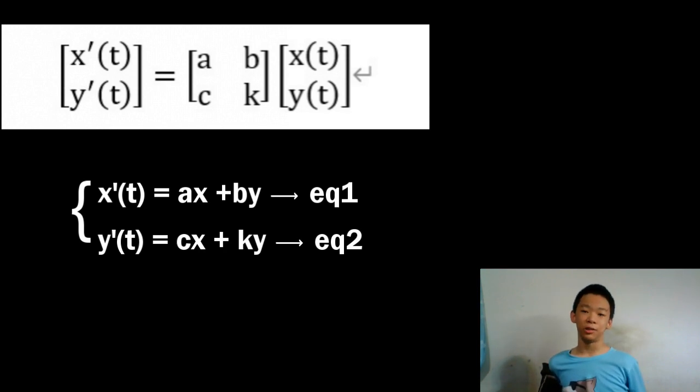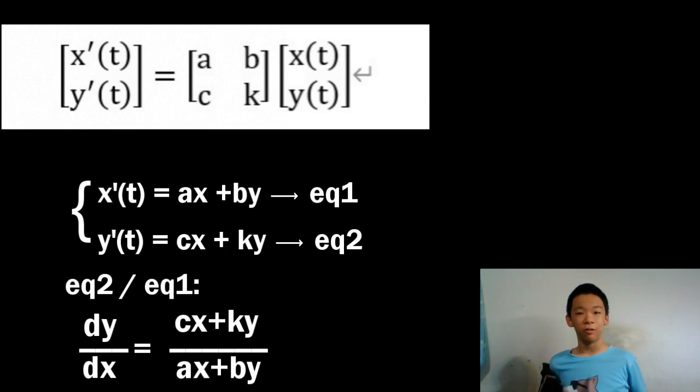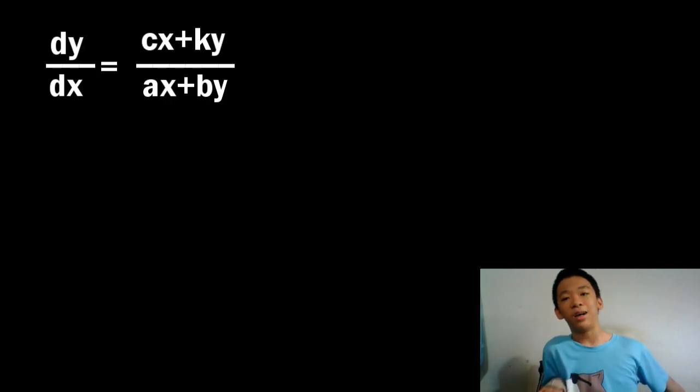Here comes the part that I find really interesting. Divide the two equations and you'll notice that this becomes an implicit derivative problem. dy over dx equals cx plus ky over ax plus by. Now I confess, I haven't actually found a general solution for x of t and y of t.